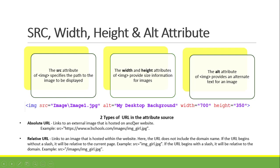There are two types of URL for the src attribute. First is the absolute URL — it links to an external image hosted on another website, meaning the image is fetched online and not saved on your computer. Then there's the relative URL, which is what we use now. The image is saved on our own computer, so the src just references the folder where the image is located, then the file name of the image.